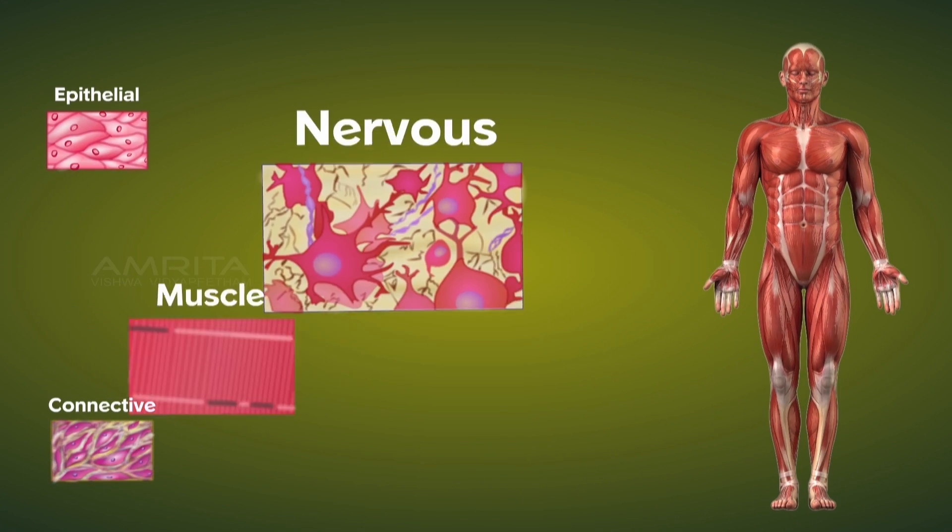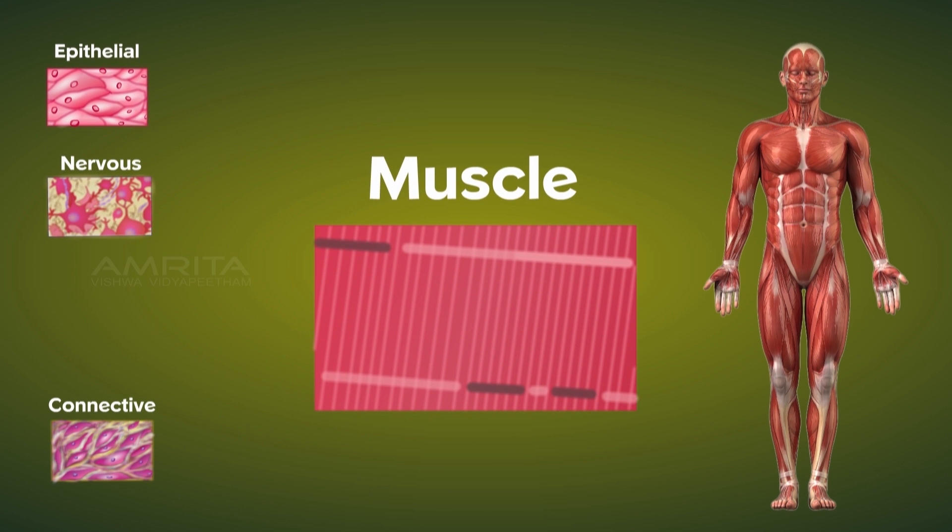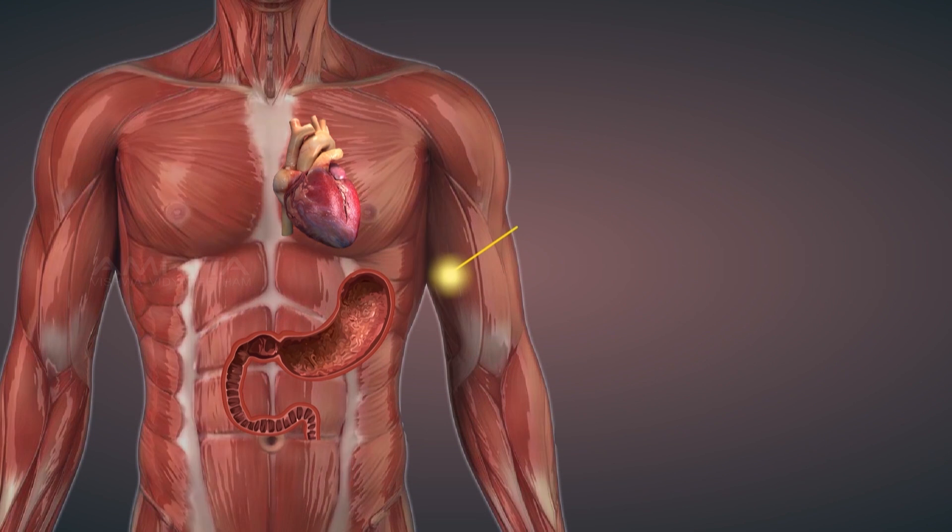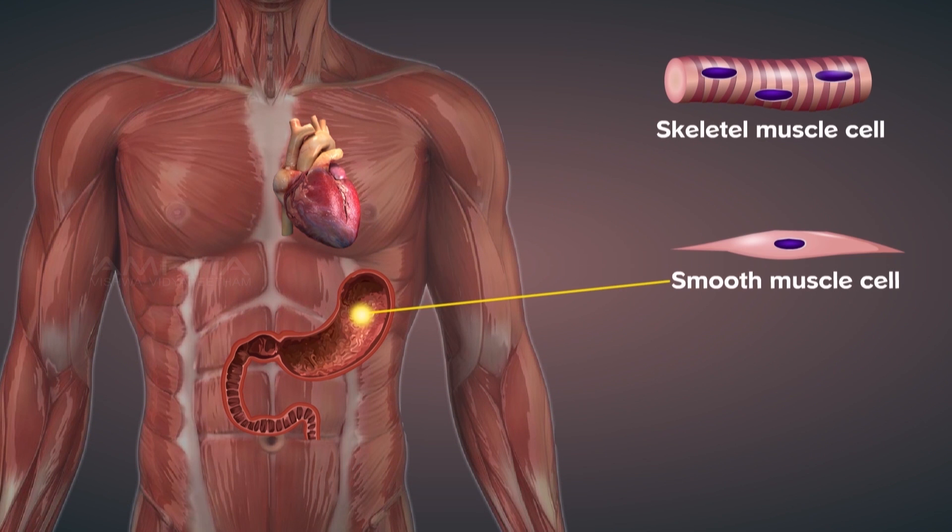The third tissue type is the muscle tissues that are responsible for the movement in our body. The three types of muscle tissues are skeletal, smooth and cardiac.